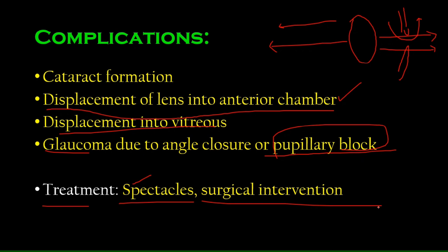These are easy, relatively low-yield topics. Examiners would much prefer asking about cataracts in lens-related chapters. Aphakia and ectopia lentis are not very important compared to cataracts. That's it for today — like, subscribe, and share if you understood something, and have a very good day.